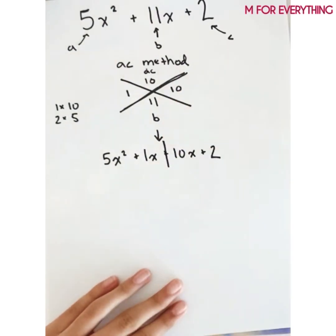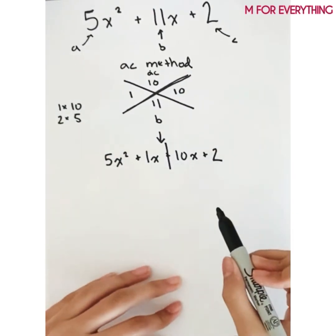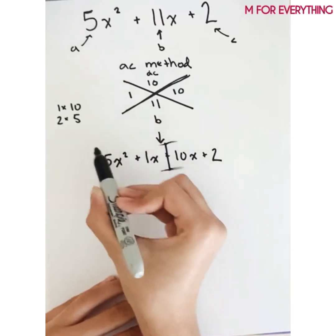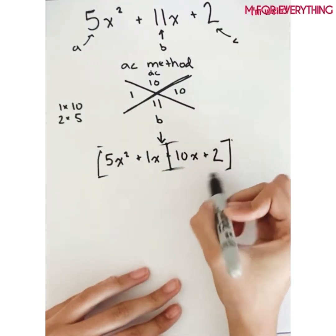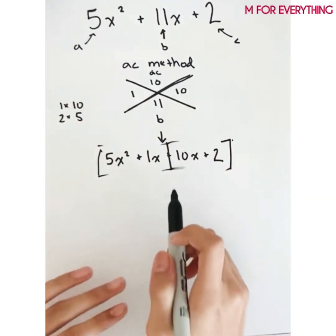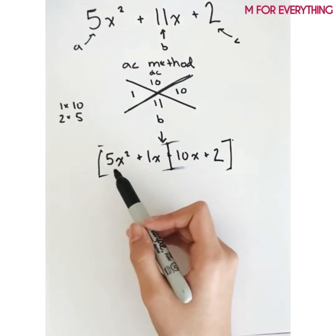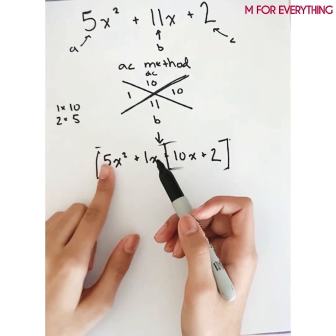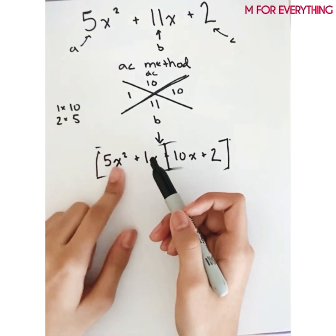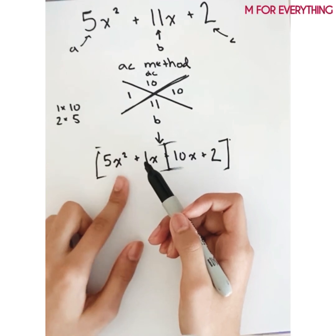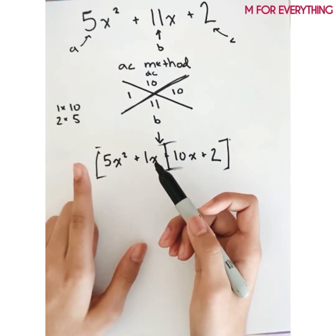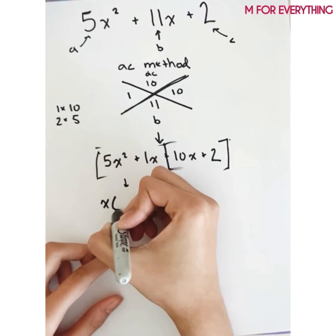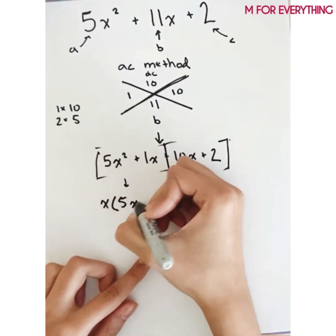I split this expression in half — it becomes a four-term polynomial. Now I factor out a common factor from each pair. From the first pair (5x squared plus 1x), I can factor out x, leaving x(5x + 1). For the second pair (10x plus 2), I factor out 2, leaving 2(5x + 1).